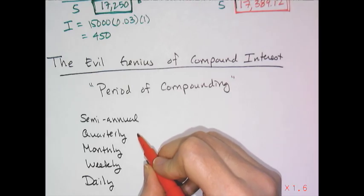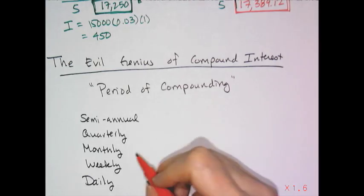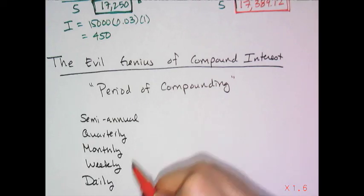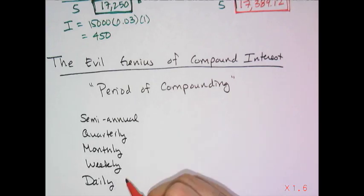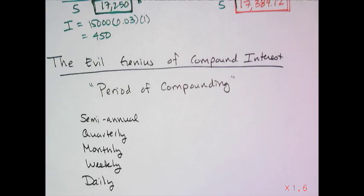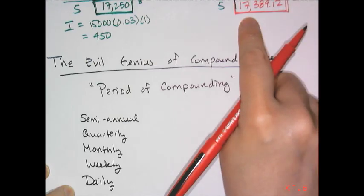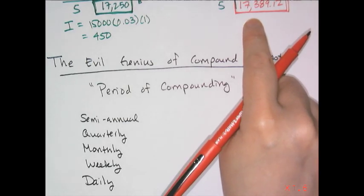Quarterly means dividing the 3% by 4 and charging interest 4 times a year. Monthly means dividing by 12 and charging 12 times a year. Weekly is 52 times a year, and daily is 365 times a year. You'll see it's not going to be a huge difference in the short run — because if it were, no one would be allowed to get away with it.